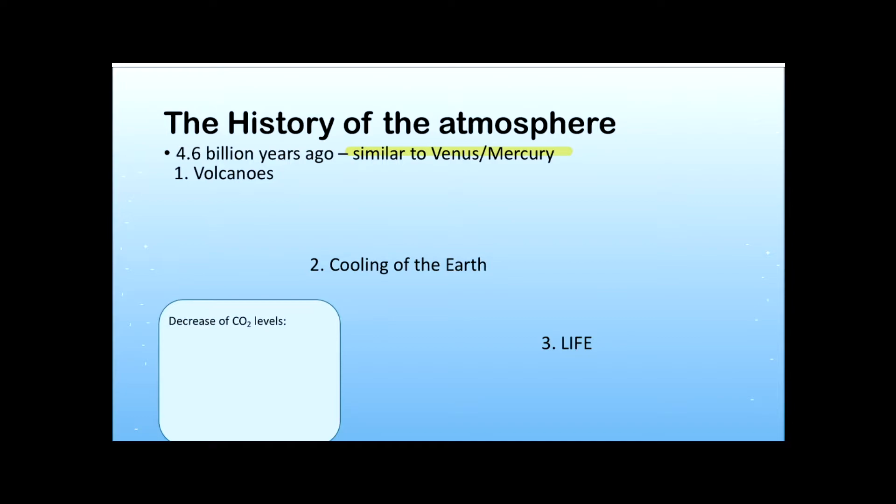So volcanoes, we know, do throw out lots of gas. They throw out particularly CO2 and H2O. So those are the main gases, H2O because it was really hot in the world at the time. CO2 and H2O were the main gases. We also had smaller amounts of nitrogen, which was released steadily over a very long period of time, and that's the most common gas in the atmosphere now. We also had small amounts of methane, which is CH4, and ammonia, which is NH3.